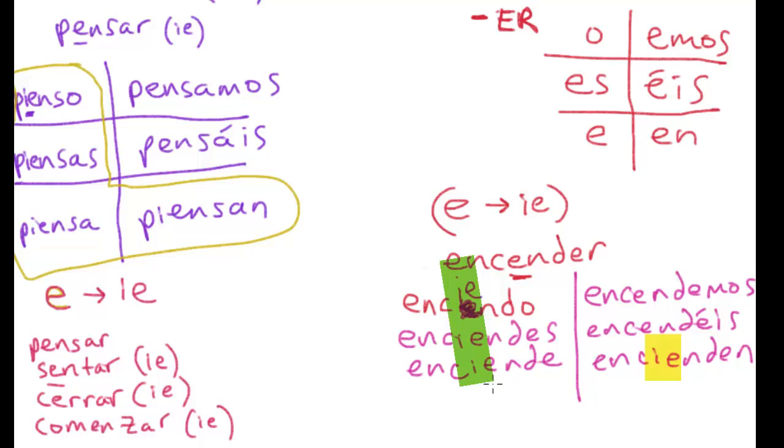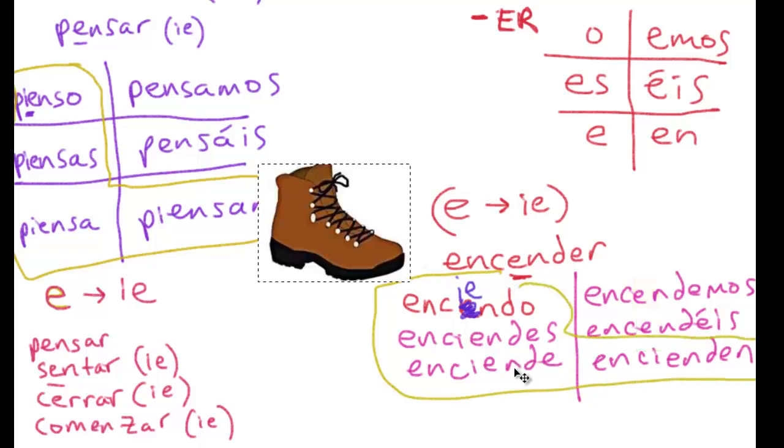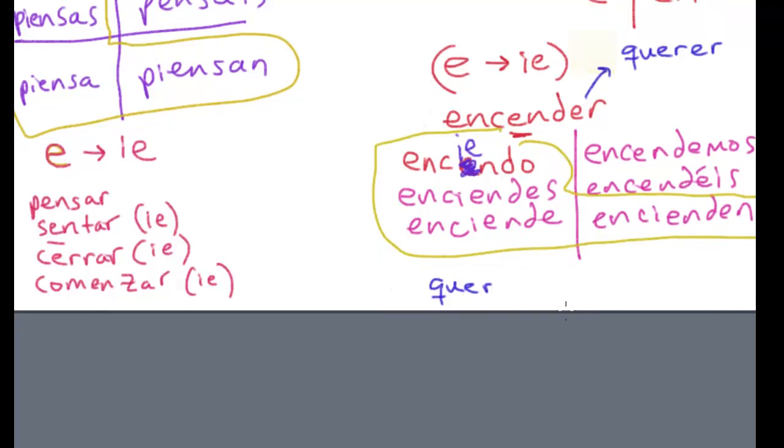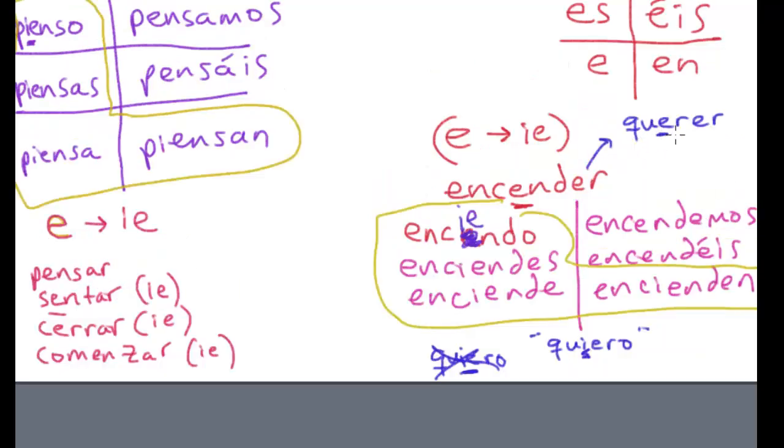The verb encender has stem changes here but not here, and that gives us una bota, la bota. Some more verbs that do this: querer is a famous one in español. Querer is to want. If you try writing that, in la forma yo the ending is -o. You don't say quero, it's not how you say I want in español. It's quiero. There's its stem change, a reminder that it's a stem-changing verb.